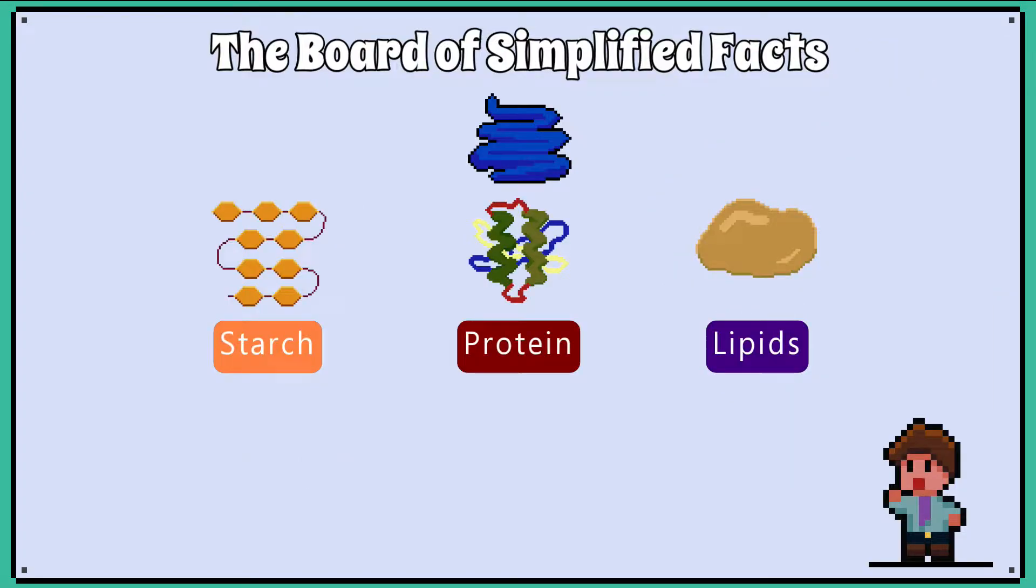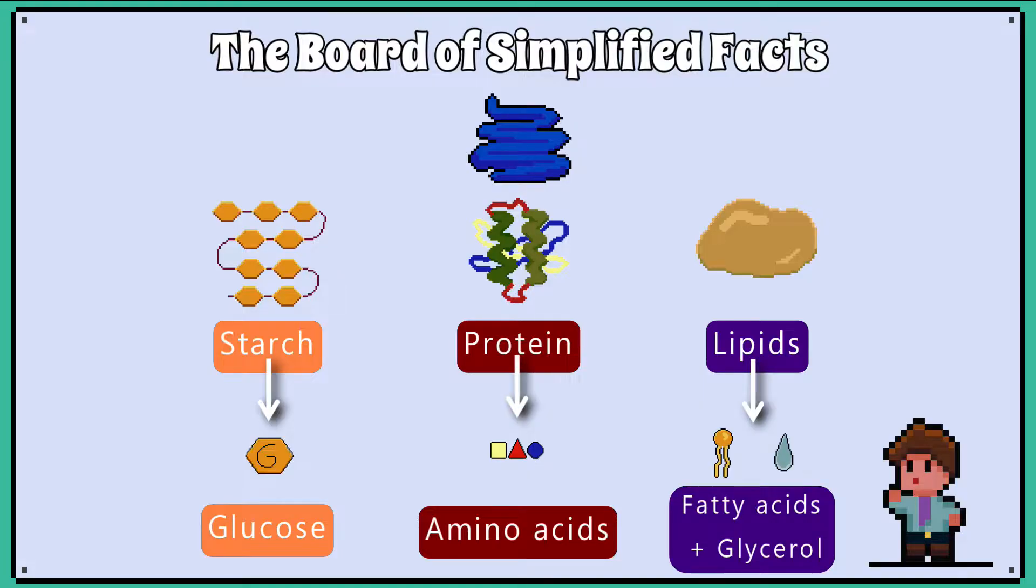In our small intestine, the large insoluble food molecules—starch, protein and lipids—are being broken down into their respective smaller soluble food molecules: glucose, amino acids, and fatty acids plus glycerol.